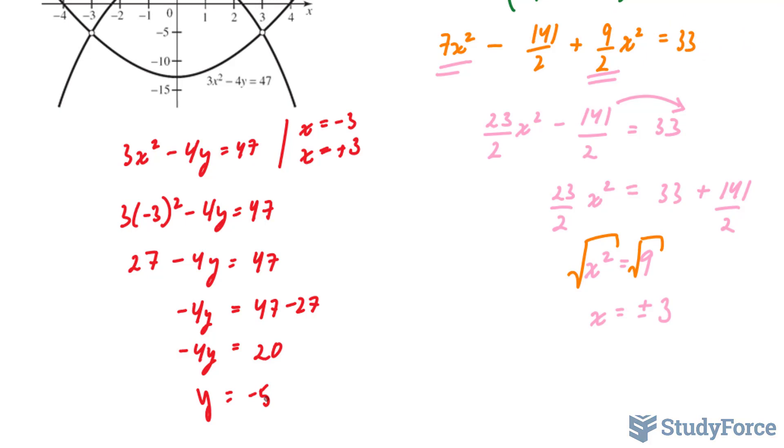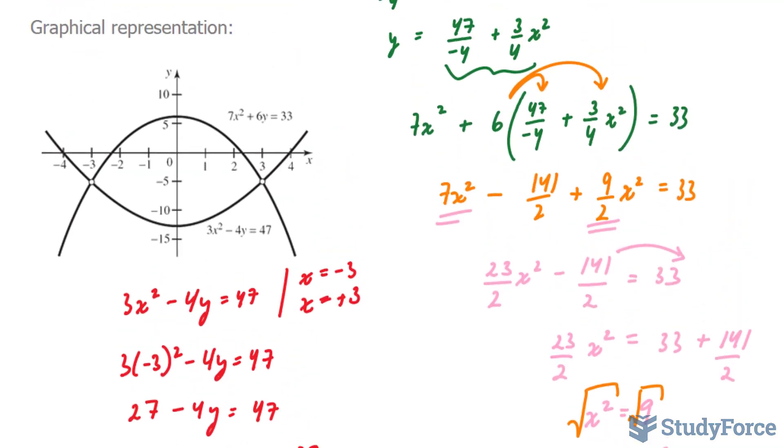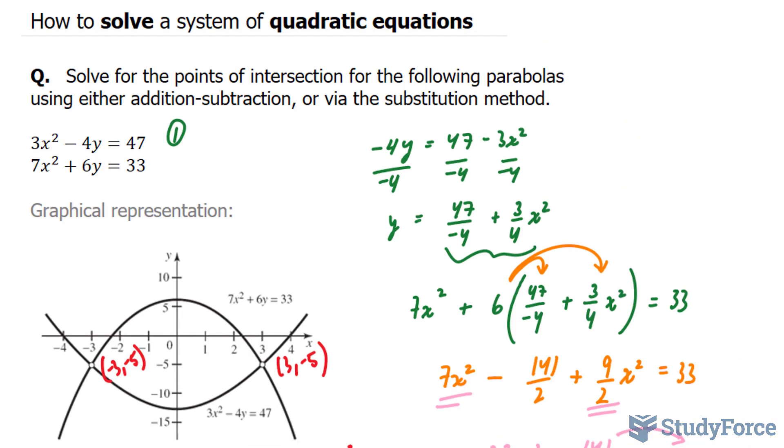And the same thing would happen had we applied x is equal to positive 3 into this equation. And as a testament to that, take a look at our graphical representation. We have two points of intersection. One at negative 3 and negative 5. And one at positive 3 and negative 5. And so there you have it. That is how to solve a system of quadratic equations.